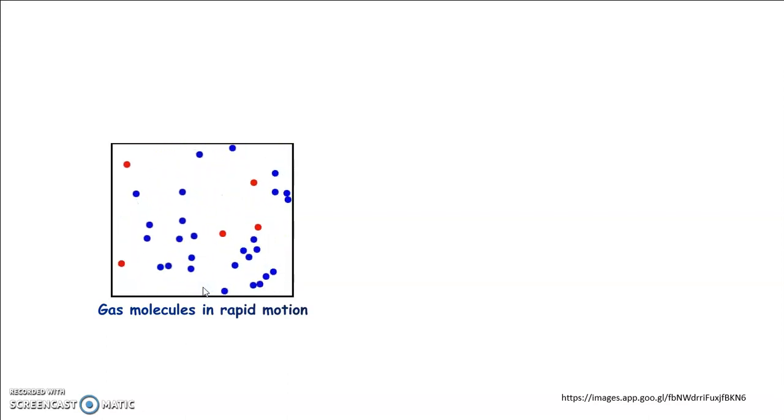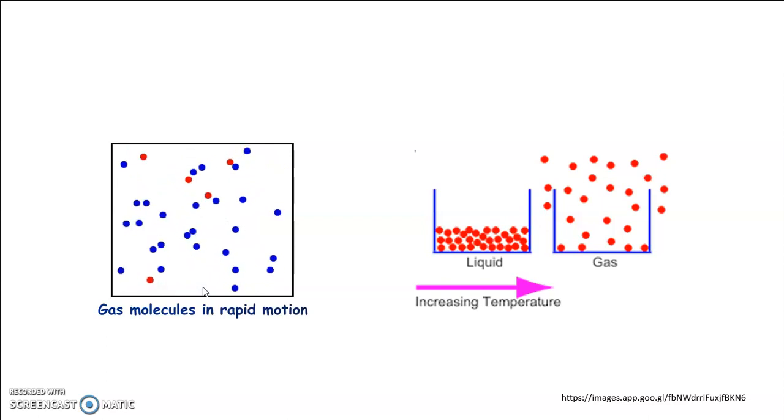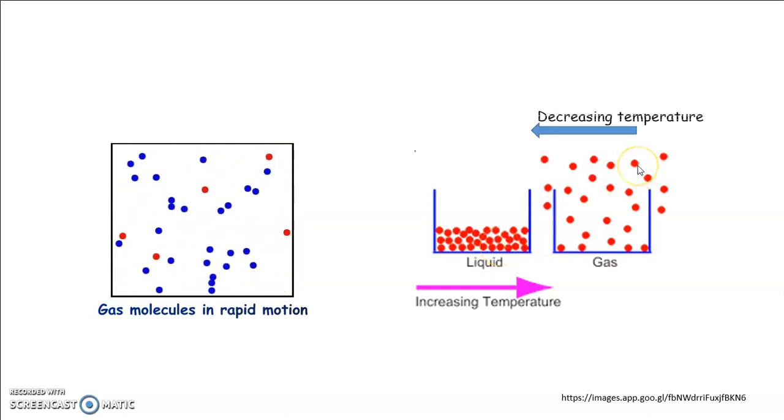However, as the temperature of a gas is lower, the kinetic energy of the molecule decreases. The volume occupied by the gas also decreases. At a sufficiently low temperature, some of the slow moving molecules cannot resist the force of attraction and they come closer and closer and ultimately the gas changes to liquid state.